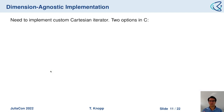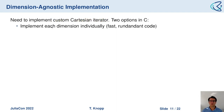Let's go into more detail on how we achieved a dimension-agnostic implementation. We needed to implement custom Cartesian iterators. In C and C++, you have two options: first, implement code separately in 1D, 2D, and 3D and combine all this — it is the fastest but leads to redundant code.